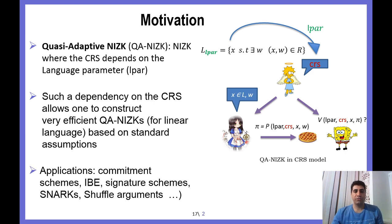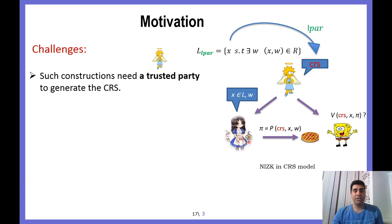As an application, this QA-NIZK can be used to construct Commitment Schemes, IBE, and Signatures, and recently they are used to build SNARKs and shuffle arguments. The main challenge in such a model, and basically in the CRS model, is the need of a trusted party for generating the CRS, which raises the following questions.